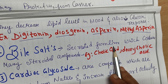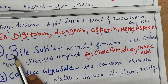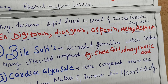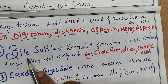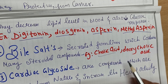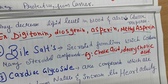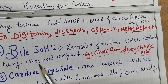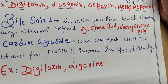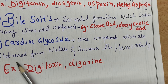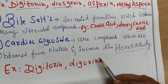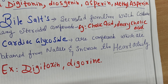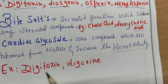Bile salts are secreted from the liver and contain many steroidal compounds. The main examples are cholic acid and deoxycholic acid. Cardiac glycosides are compounds obtained from nature that increase heart activity, helping boost cardiac contractions and compression of heart muscles. Main examples are digitalitoxin and digoxin.